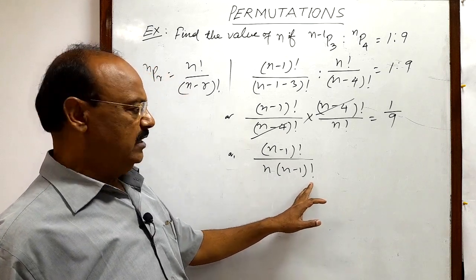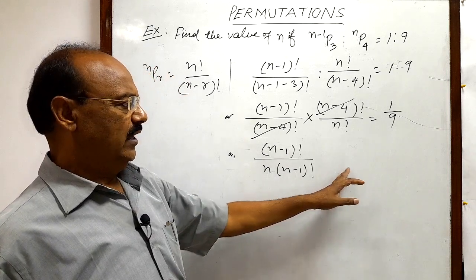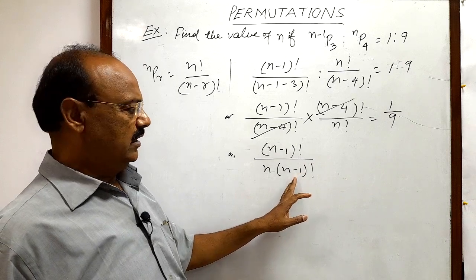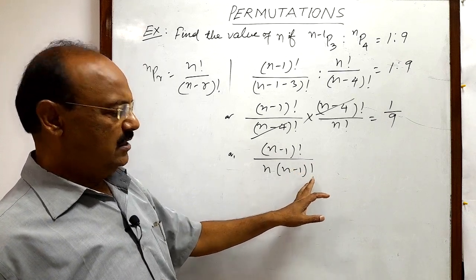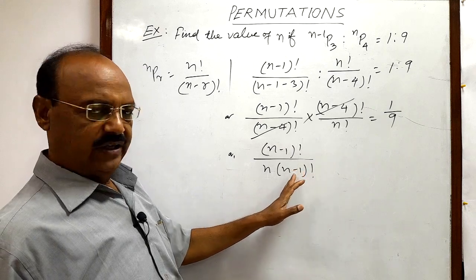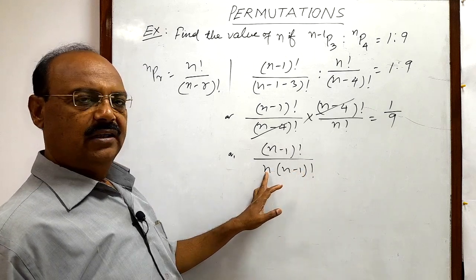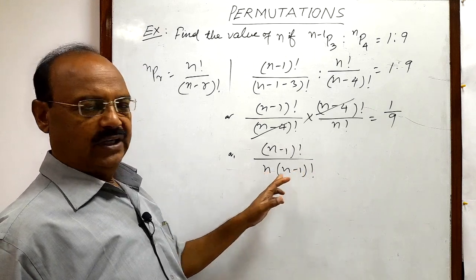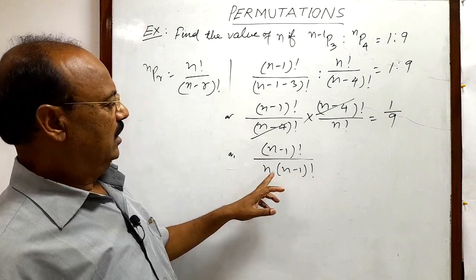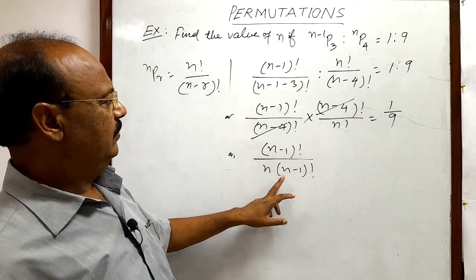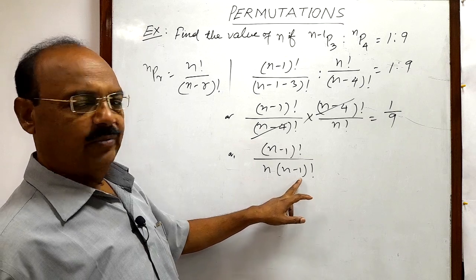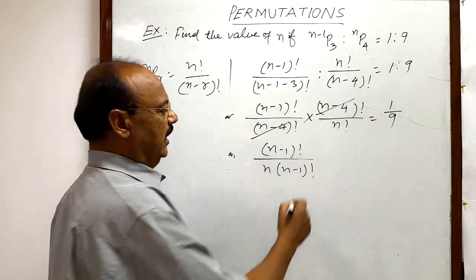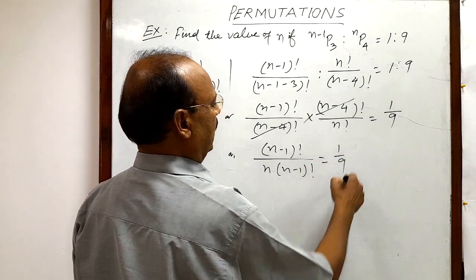...because (n-1)! is a continued multiplication starting from 1 to n-1. As per factorial notation, 1 × 2 × ... × (n-1), and this n is here, so this is n!. So n! can be written as n × (n-1)!, and this is equal to 1/9.